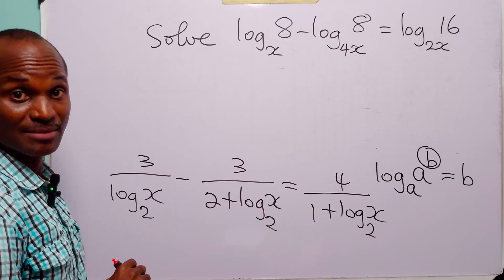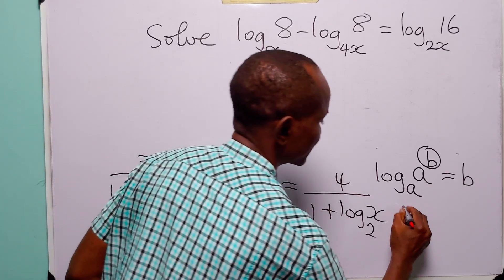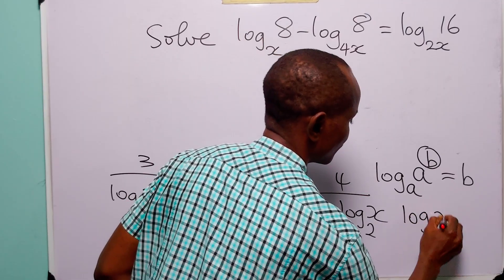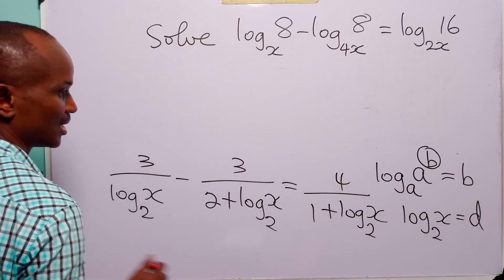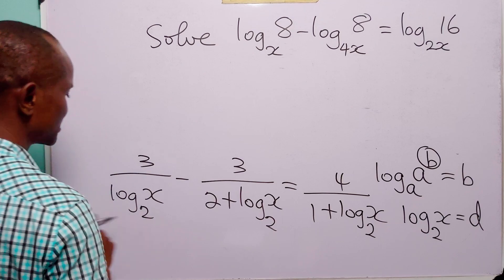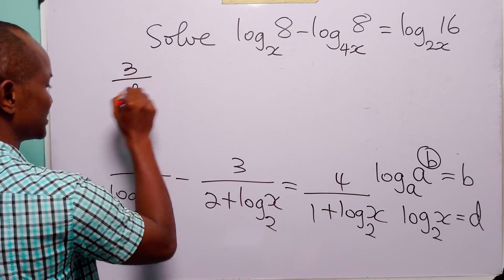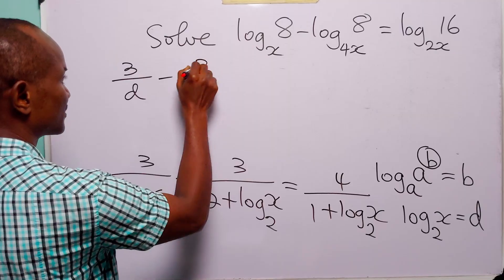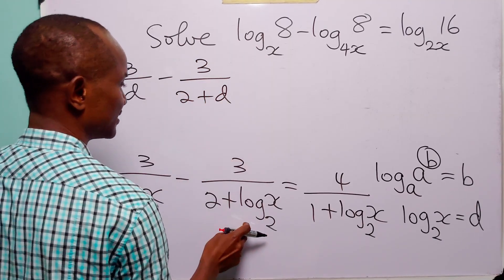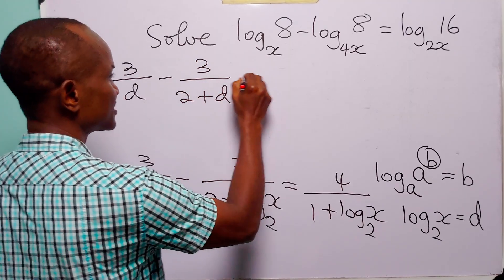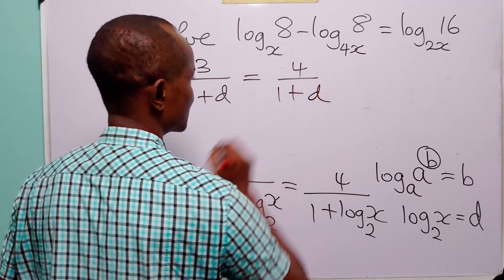To further simplify, let log base 2 of x be equal to d. With this substitution, the equation becomes 3 over d, minus 3 over (2 + d), equals 4 over (1 + d).